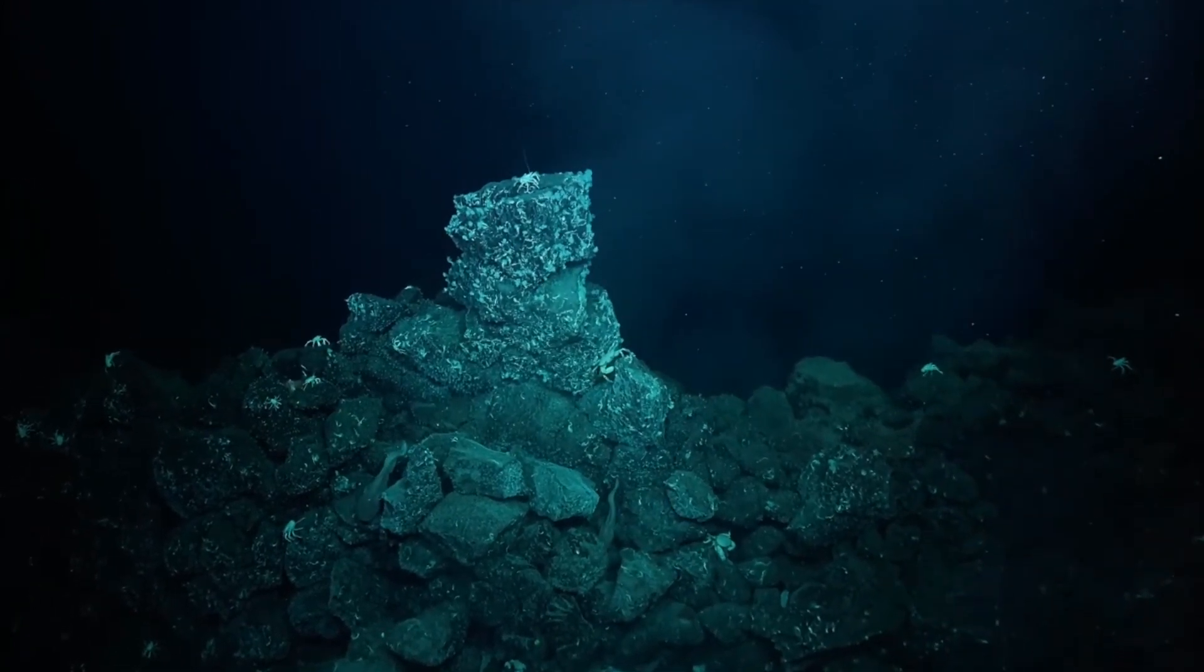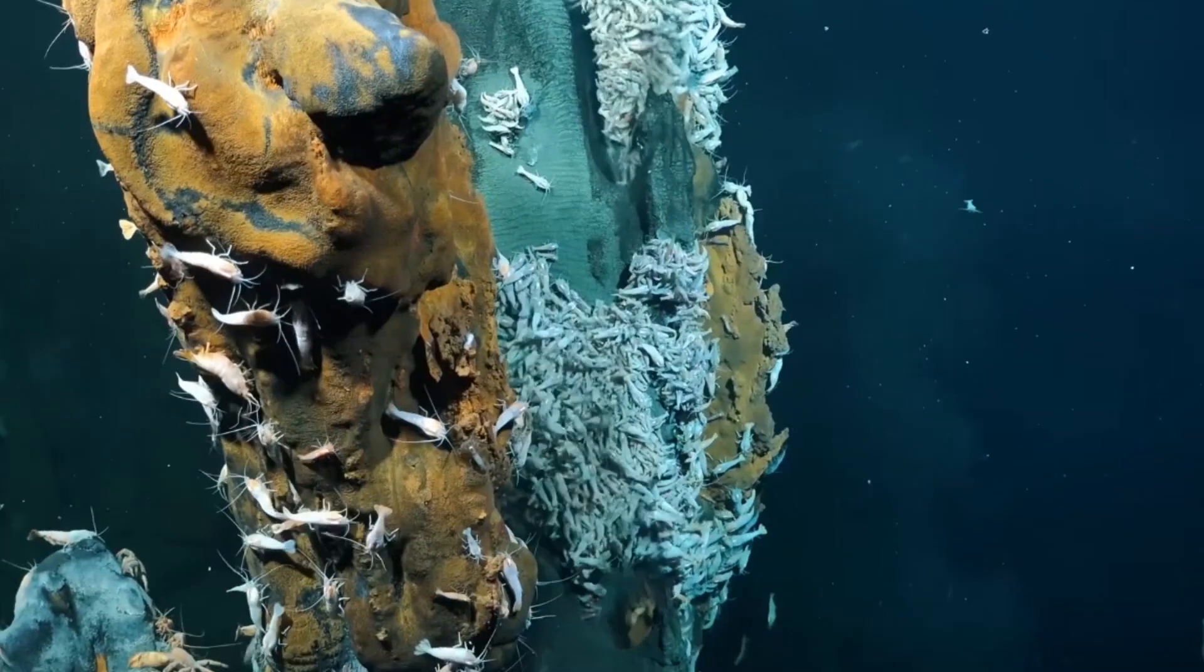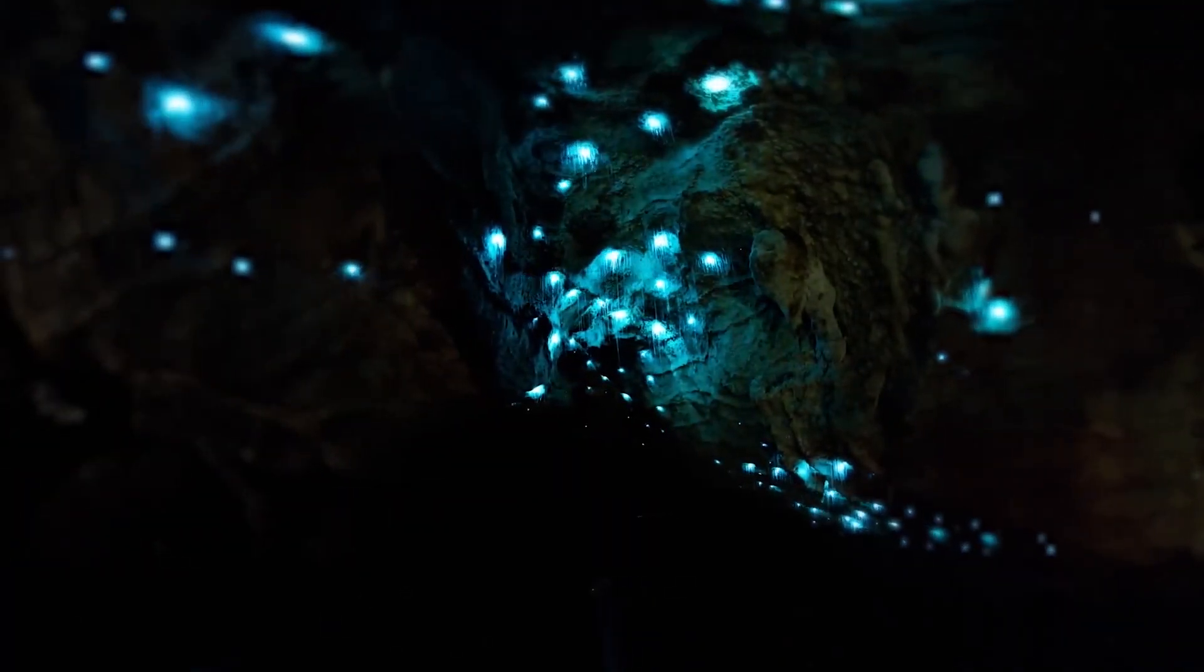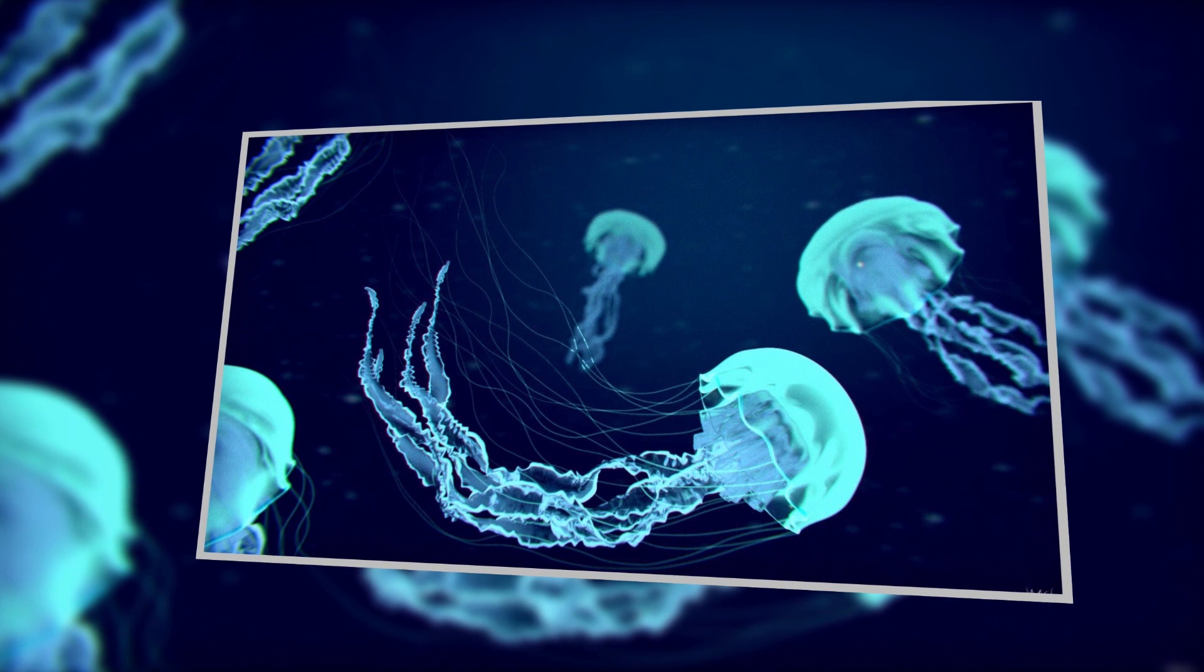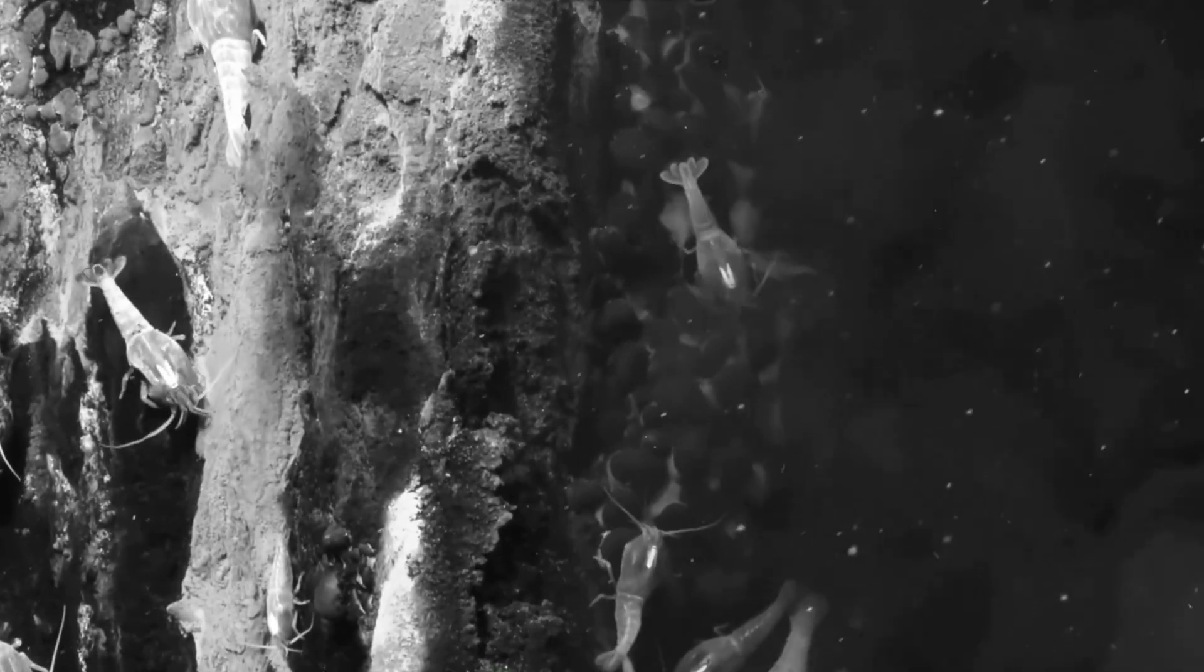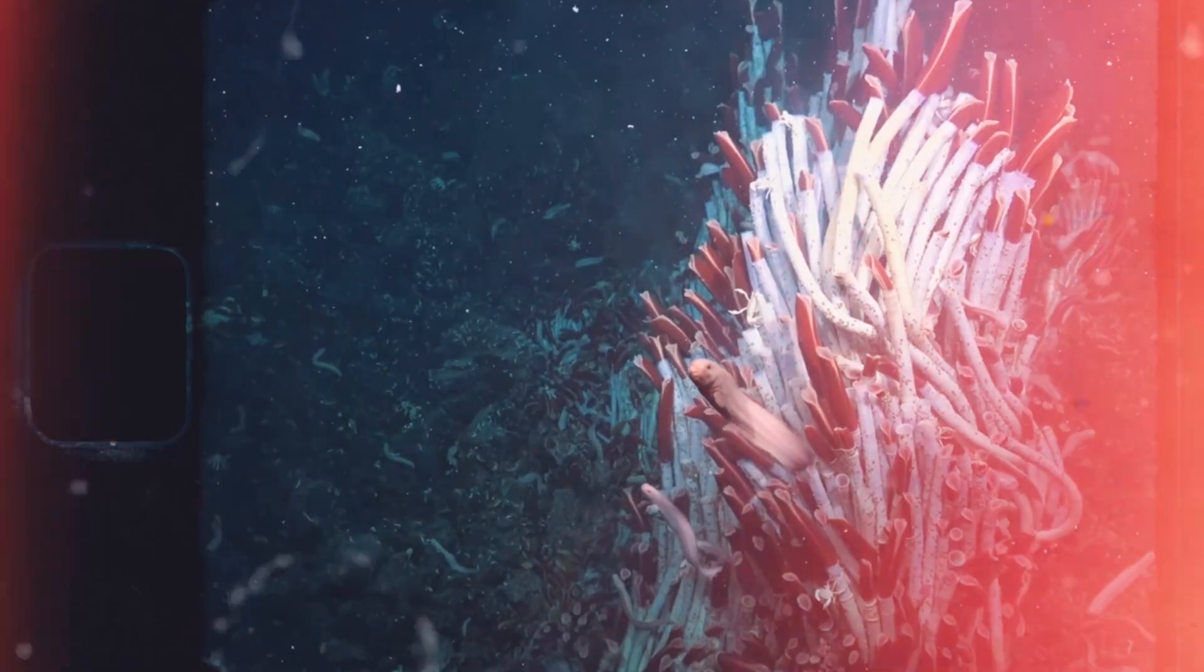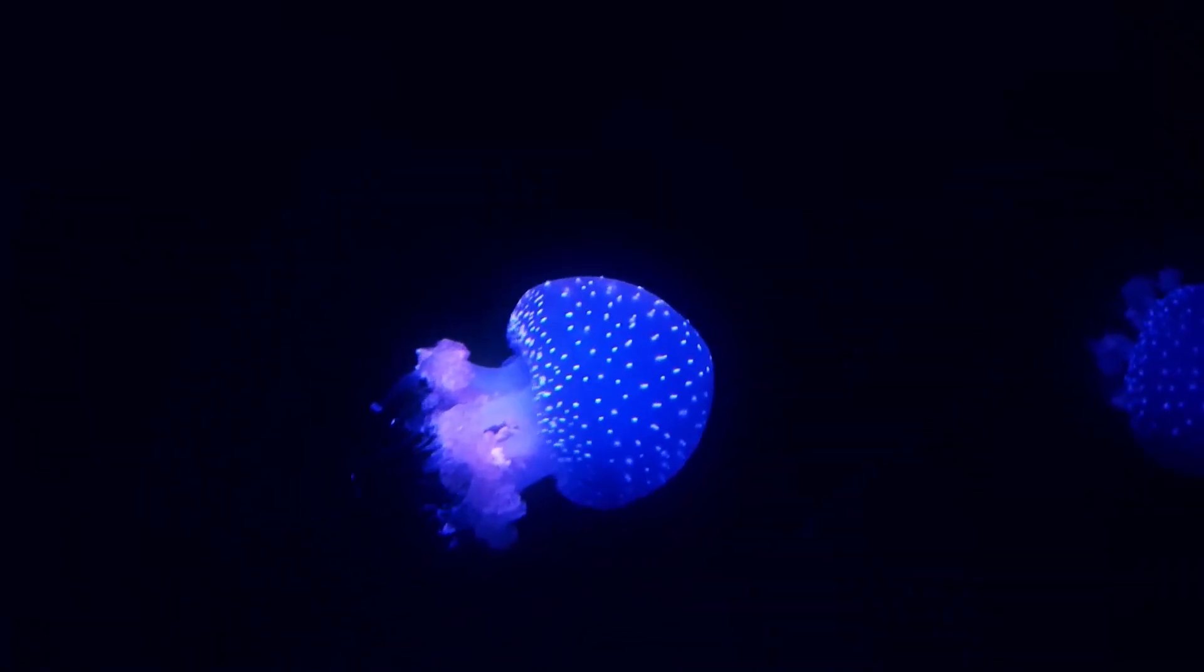Moreover, the deep sea is vast and sparsely populated. The ability to produce light allows organisms to communicate over longer distances, increasing their chances of finding food or mates in this expansive environment. One might wonder why organisms would evolve to produce their own light in an environment where energy is scarce. Surprisingly, bioluminescence is an incredibly efficient process. The chemical reaction that produces light generates very little heat, meaning almost all the energy is converted into light. This efficiency is crucial in the deep sea, where food can be scarce and every bit of energy counts.